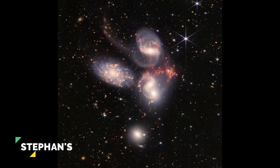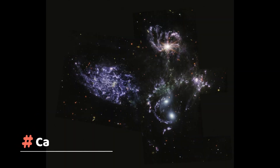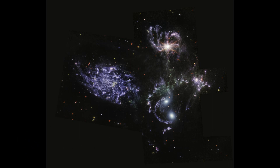Image number 2: Stephan's Quintet. This is a well-known group of galaxies some 290 million light years away. Four of them are relatively close to one another, locked in a cosmic dance of repeated close encounters. With its powerful infrared vision and extremely high spatial resolution, Webb shows never-before-seen details in this galaxy group. Sweeping tails of gas, dust, and stars are being pulled out from several of the galaxies due to gravitational interactions.